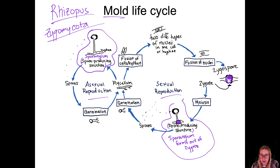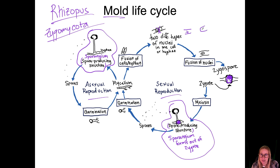The spore-producing structure in Rhizopus is a sporangium — that little lollipop-looking thing — not a conidiophore. The other key difference is that when cell fusion and nuclear fusion happen between two different mating types (male and female), they form a big, thick, round structure around where the nuclei fused — called a zygospore. The outer coat is the zygospore, and the structure in the middle is the zygote.